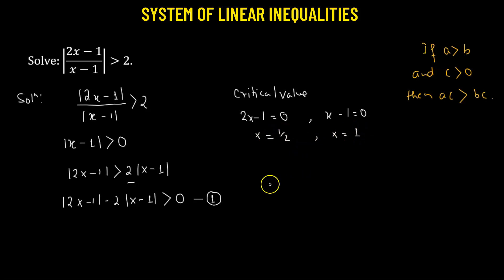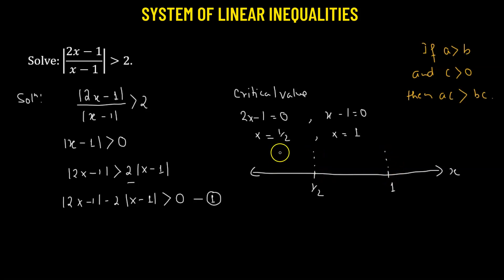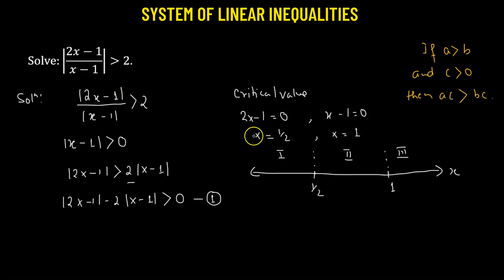Using these critical values, we consider the real number line with x equals one-half and x equals 1 marked as points. This divides the number line into three regions: region 1, region 2, and region 3. We will study the behavior of inequality number 1 in each of these three regions.